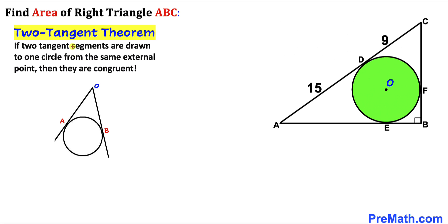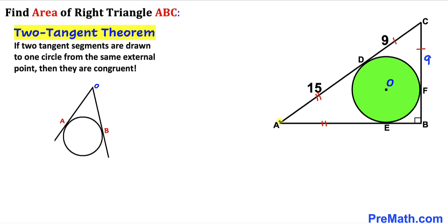Let's recall the Two Tangent Theorem: if two tangent segments are drawn to one circle from the same external point, then they are congruent. Applying this to our problem, line segment CD is congruent to line segment CF, so CF equals 9 units. Likewise, line segment AD is congruent to line segment AE, so AE equals 15 units.